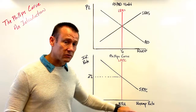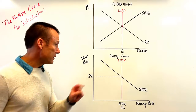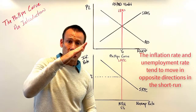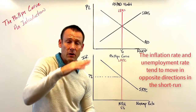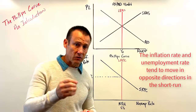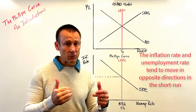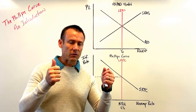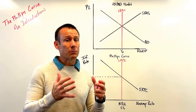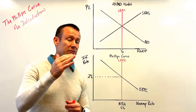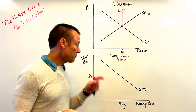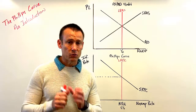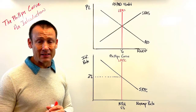The relationship between the inflation rate and the unemployment rate tends to be inverse in the short run. Think of it like a seesaw — when one goes up, the other goes down. When the inflation rate goes up, the unemployment rate goes down. The inflation rate goes up when the economy is booming, and the unemployment rate goes up during recessions, when the inflation rate tends to come down.